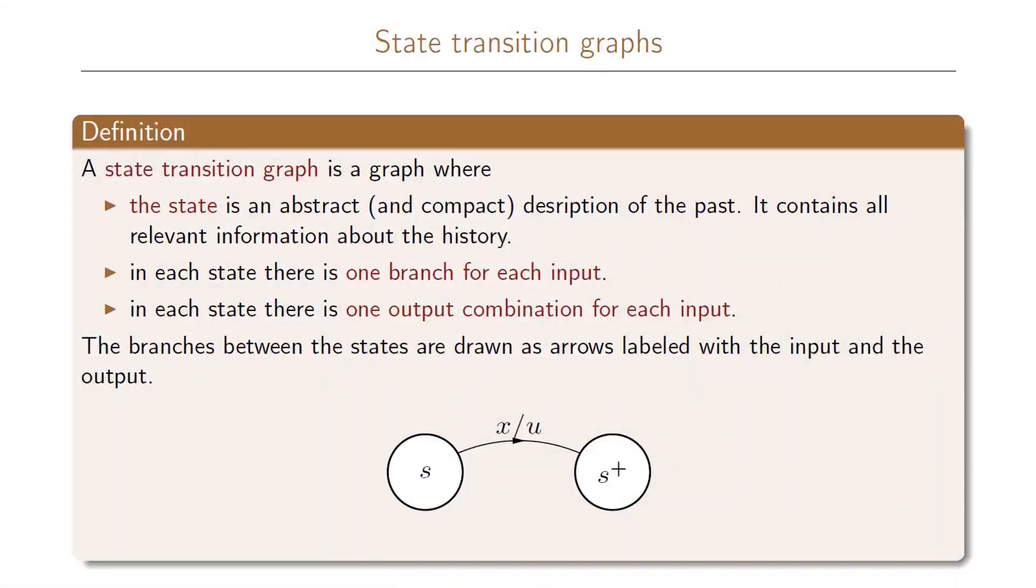State transition graphs are used to support memory in our system. The state here is a description of the past and contains all the relevant information about the history that we need in order to solve our problem.